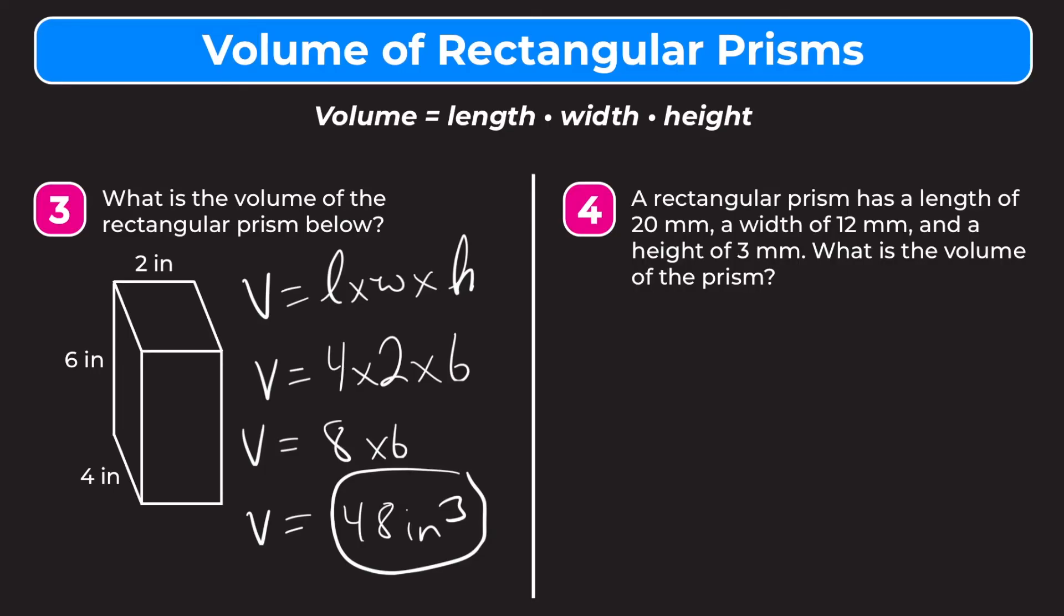Let's try number four. A rectangular prism has a length of 20 millimeters, a width of 12 millimeters, and a height of 3 millimeters. What is the volume of the prism?